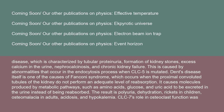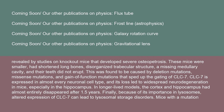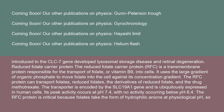CLC-7's role in osteoclast function was revealed by studies on knockout mice that developed severe osteopetrosis — these mice were smaller, had shortened long bones, disorganized trabecular structure, a missing medullary cavity, and teeth that did not erupt. This was caused by deletion mutations, missense mutations, and gain-of-function mutations that sped up the gating of CLC-7. CLC-7 is expressed in almost every neuronal cell type, and its loss led to widespread neurodegeneration — especially in the hippocampus — with the cortex and hippocampus nearly entirely disappearing after 1.5 years in longer-lived models. Altered expression of CLC-7 can also lead to lysosomal storage disorders, with mice developing lysosomal storage disease and retinal degeneration.